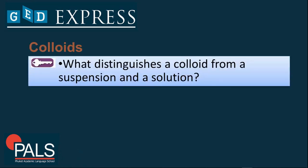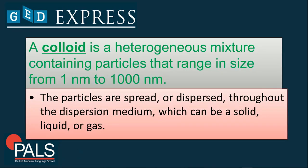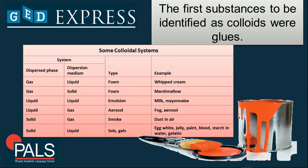What distinguishes a colloid from a suspension or a solution? A colloid is a heterogeneous mixture containing particles that range in size from 1 nanometer to 1,000 nanometers. The particles are spread or dispersed throughout the dispersion medium, which can be a solid, liquid, or gas. Technically, the first substances identified as colloids were glues.